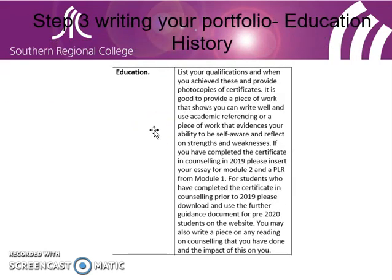List your educational qualifications and when you achieved them, providing photocopies or images of certificates in the appendix to evidence these. It's good to provide a piece of work that shows you can write well and use academic referencing, or that evidences your ability to be self-aware and reflect on strengths and weaknesses. If you completed the Certificate in Counselling in 2019-2020, insert your essay from Module 2 and a PLR from Module 1 with commentary on your learning. For students who completed the Certificate prior to 2019, download the Further Guidance document for pre-2019 students. You may also write about any reading in counselling you've done, such as Gerard Egan or Rogers, and the impact of that writing on you.